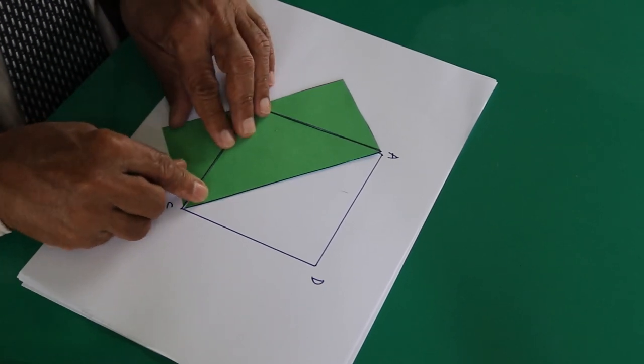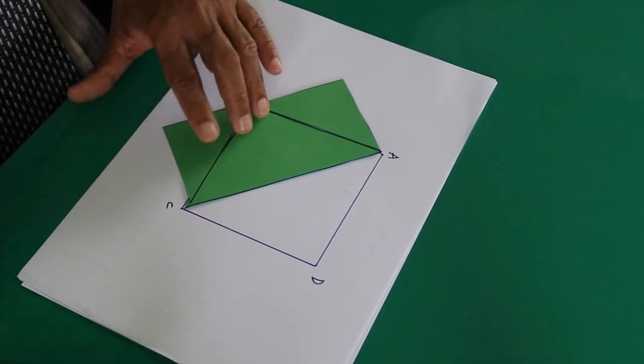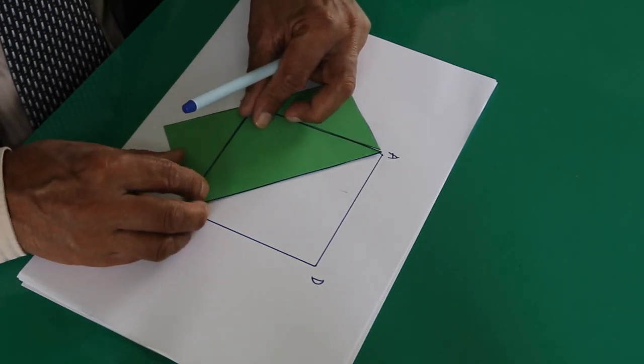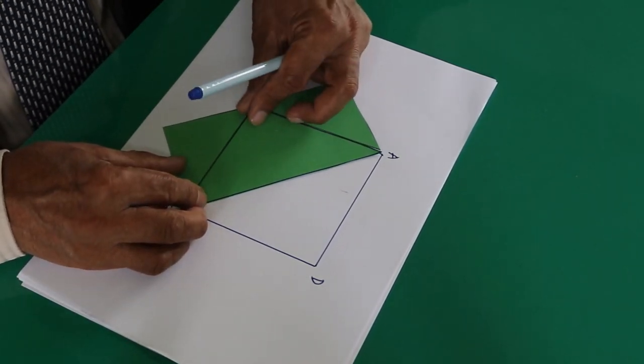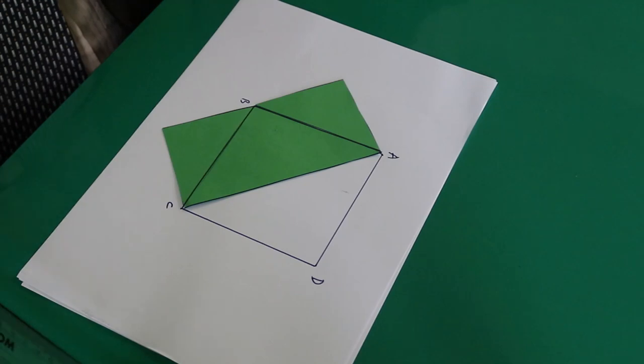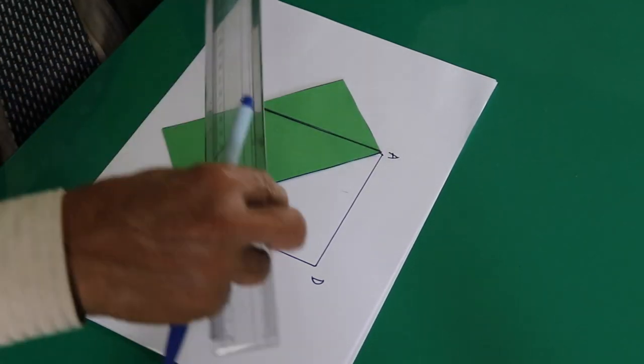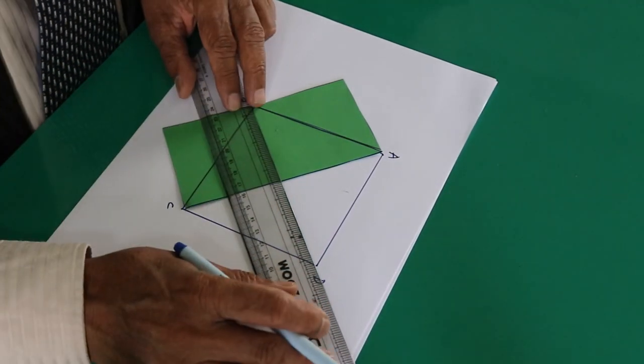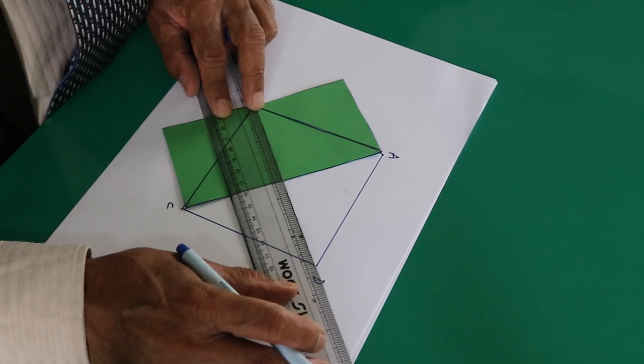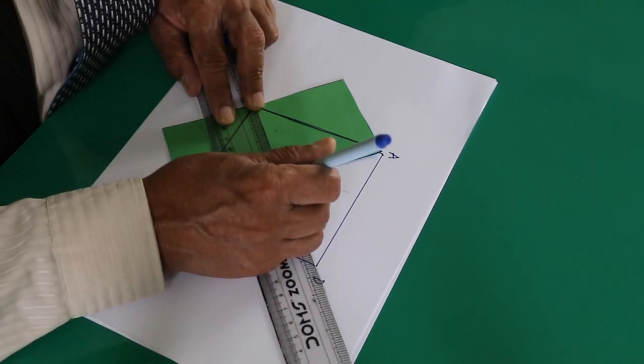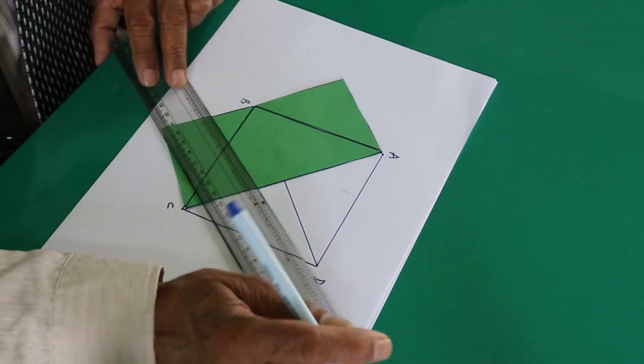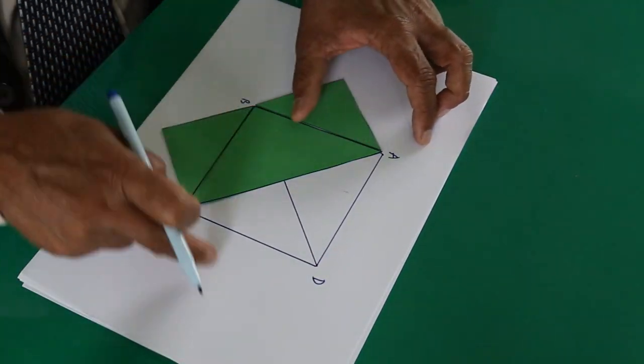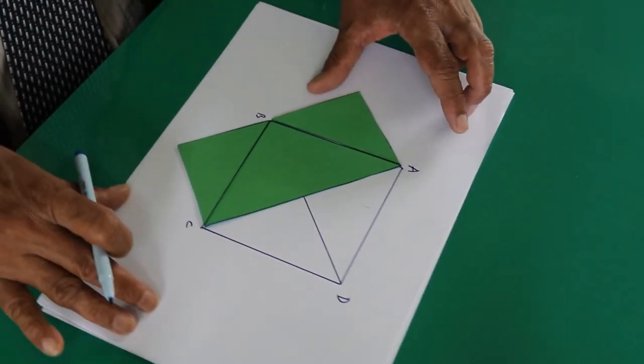For explanation purposes, let me draw half of the diagonal over there also. This one is the previous square, and this is another arrangement.